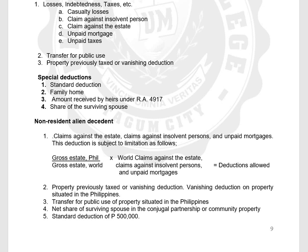How do we compute the deductions allowed for NRA? We use the ratio: gross estate Philippines over gross estate world. The numerator is gross estate Philippines; the denominator is gross estate Philippines plus gross estate abroad, which equals gross estate world. You multiply this ratio by the world claims against the estate, claims against insolvent persons, and unpaid mortgage to determine the allowed deductions.